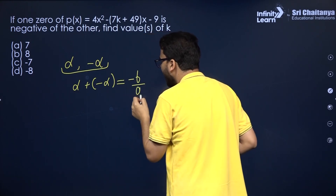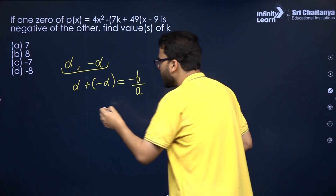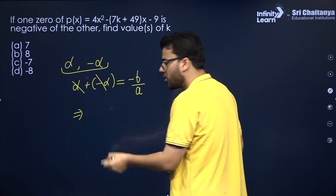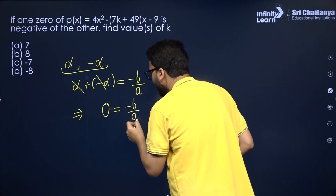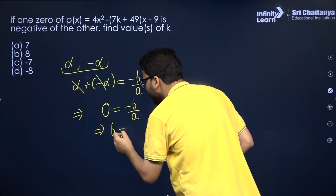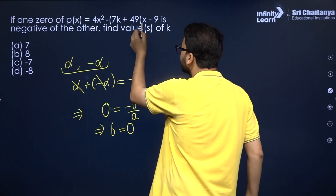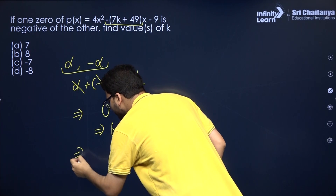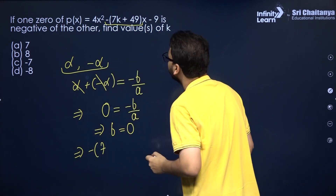For a quadratic polynomial, the sum of the zeros equals −b/a. Here, alpha and minus alpha cancel out, so the sum equals 0. That means −b/a = 0, which gives b = 0. Now b is the coefficient of x, which is −7k + 49.